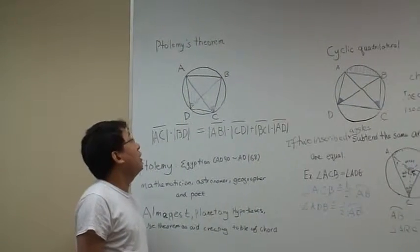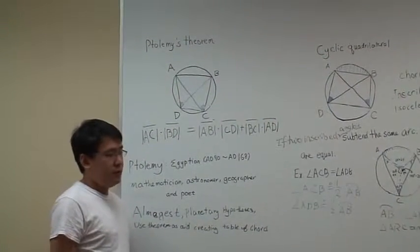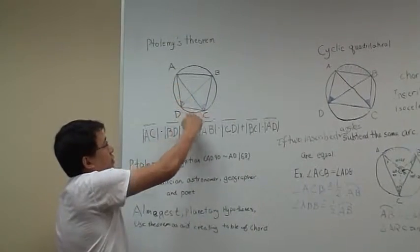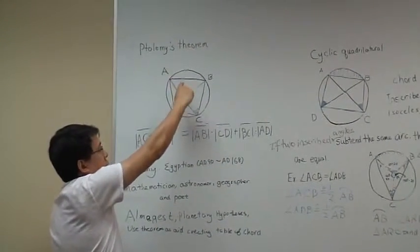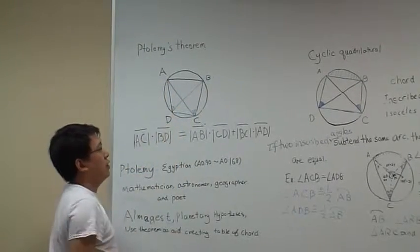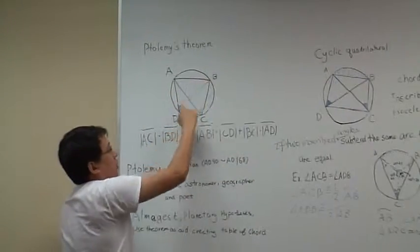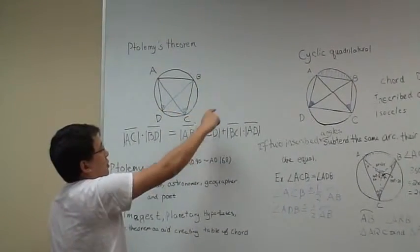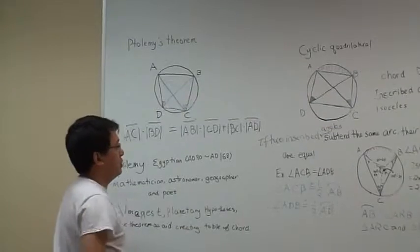Alright, today I want to talk about Ptolemy's theorem. Ptolemy's theorem is when you have a quadrilateral inscribed in a circle, and the two diagonals of the quadrilateral equals the length of the top chord times the bottom, plus the two sides.